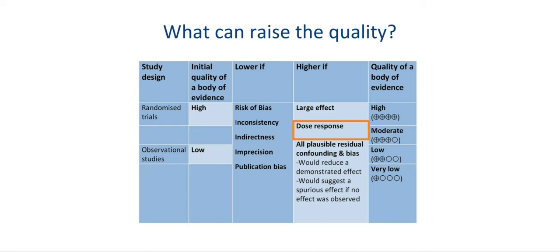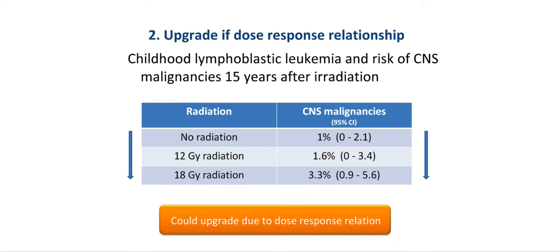The second factor that can raise quality is dose-response relations. An example comes from the pediatric literature. Childhood lymphoblastic leukemia, or CLL, has been treated with prophylactic cranial irradiation to prevent CNS recurrence. However, such irradiation may be associated with secondary CNS malignancies. When investigators looked 15 years after radiation, they found that children who received no radiation had a 1% risk of secondary malignancies; with 12 gray radiation it was 1.6%; and with 18 gray radiation it was 3.3%, where gray is a measure of the degree of radiation.